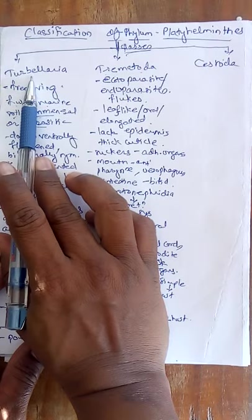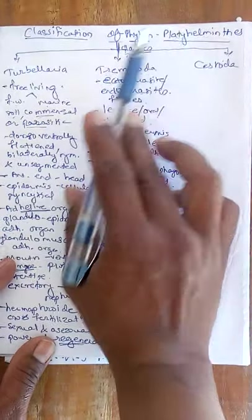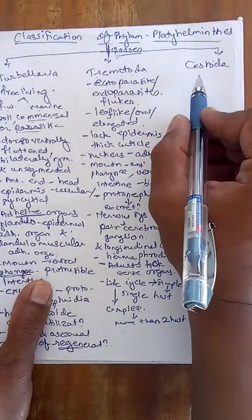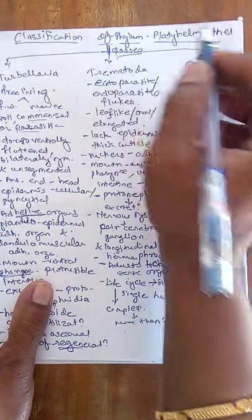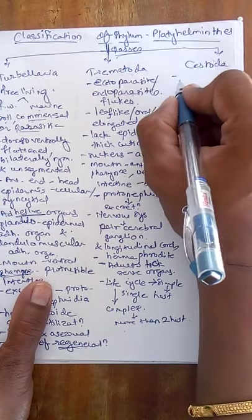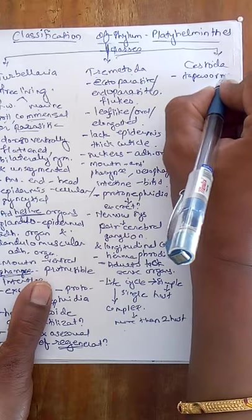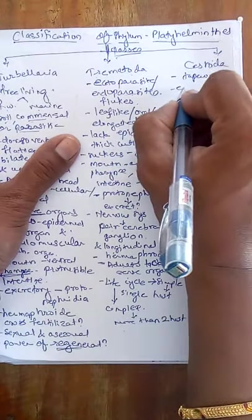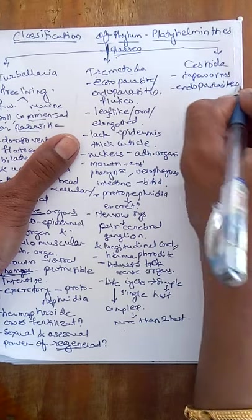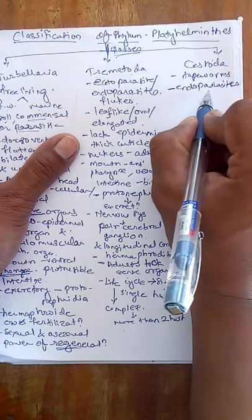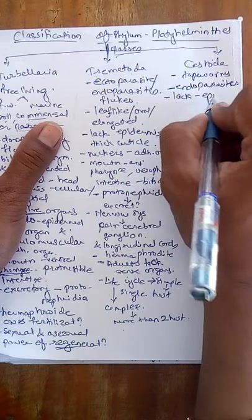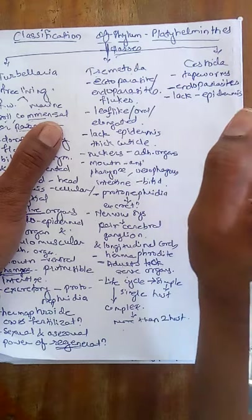Up to here we completed Turbellaria (first class) and Trematoda (second class) from Phylum Platyhelminthes. Now we study the characters of the third class, Cestoda. Animals from Cestoda are commonly known as tapeworms and are endoparasites. They lack epidermis, which acts as the outermost protective covering.